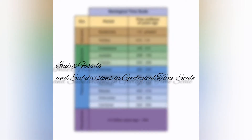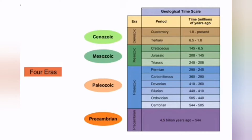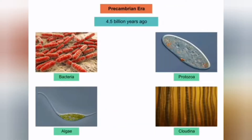Index fossils and subdivisions in the geological time scale: The geological time scale is subdivided into eons, which are subdivided into four eras — the Cenozoic, Mesozoic, Paleozoic, and the Precambrian. The Precambrian era began when Earth was first born, 4.5 billion years ago. The first organisms to evolve were simple organisms like bacteria, protozoa, algae, and Cloudina.